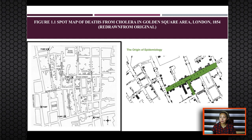The dots on the spot map show the places where people infected with cholera were located. Because Snow believed that water was the source of cholera infection, he marked the location of water pumps on his spot map and looked for the relationship between the distribution of households with cholera cases and the location of the pumps. He found that most cholera cases clustered around Pump A rather than Pump B or Pump C.